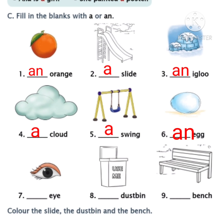Have you finished, children? Now the seventh one. The word starts with a vowel, so we must write AN in the seventh blank. Write AN in the seventh blank, children. Have you done? Now the eighth one: dustbin. The word dustbin starts with D. Is D a vowel or consonant? Yes, it's a consonant, so we must write A in the eighth blank.